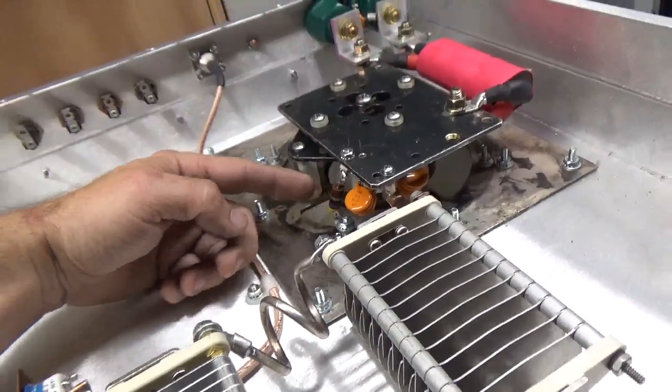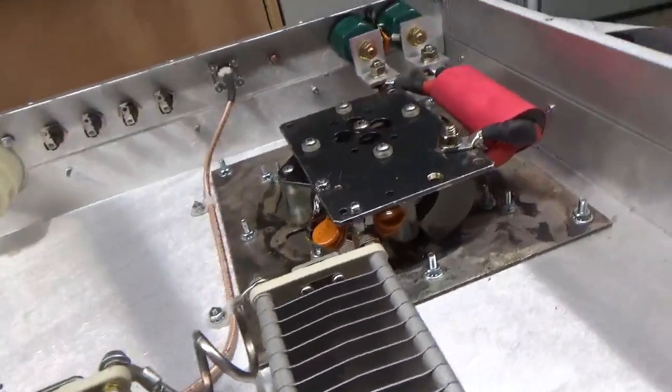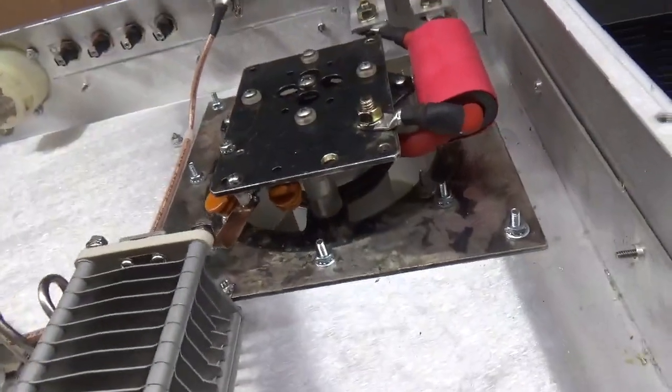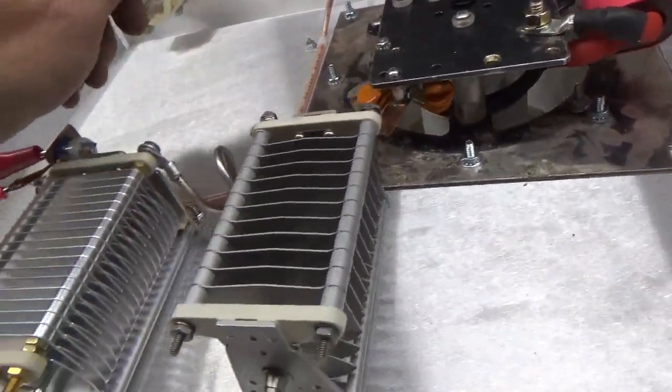We have a carbon comp resistor over here, about 51 ohms. Actually, it is 51 ohms. I went through a bunch to find one that read 51 ohms.